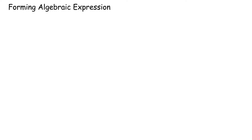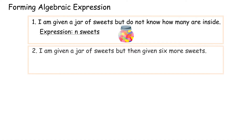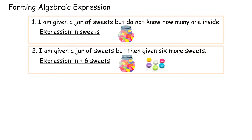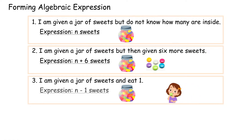Forming Algebraic Expressions. Example 1: I'm given a jar of sweets but do not know how many are inside. Expression: n sweets. Example 2: I'm given a jar of sweets but then given 6 more. Expression: n plus 6 sweets. Example 3: I'm given a jar of sweets and eat one. Expression: n minus 1 sweets.